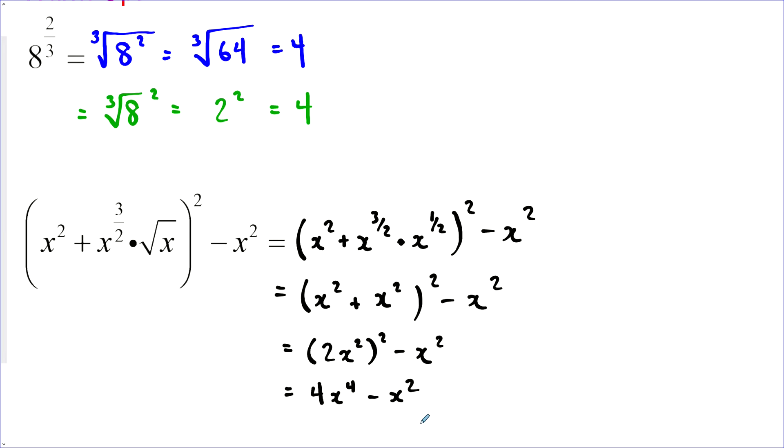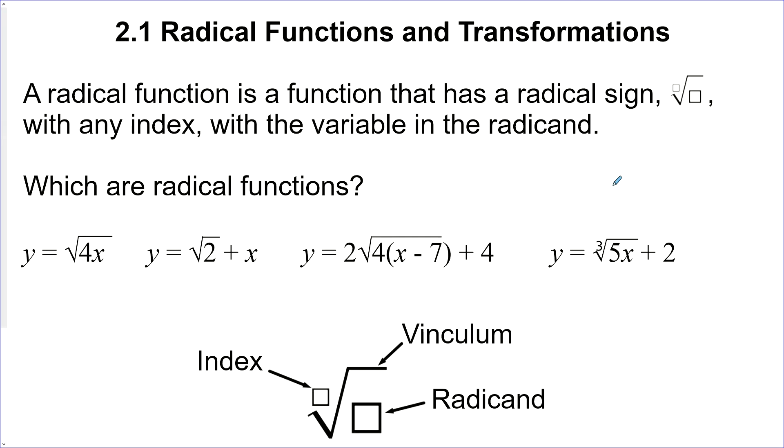But this looks pretty simple to me. 2.1 Radical Functions and Transformations. A radical function is a function that has a radical sign with any index, and the variable has to be in the radicand. Now, the radicand is the part underneath the radical sign.